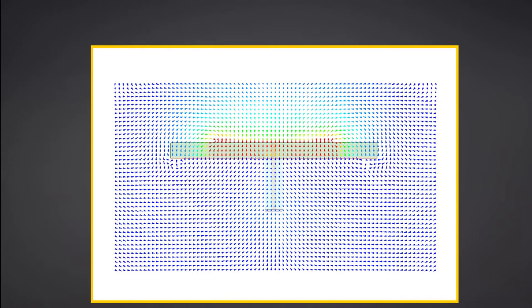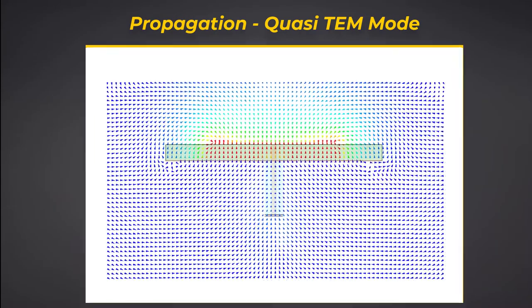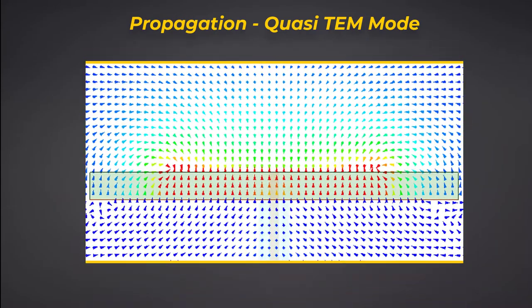Another characteristic of a microstrip antenna is that it propagates in a quasi-TM mode. Why? Because the fields in the air above the patch and in the dielectric are not the same. And as you can see from these plots you can see that the fields in the dielectric is more than the fields above in the air.